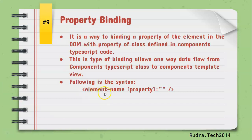In order to implement property binding, we use the following syntax: the element name followed by a property enclosed in square brackets, assigned to a variable name — the field name present in the component's class. Once this syntax is written, we can view or update those properties as and when required.